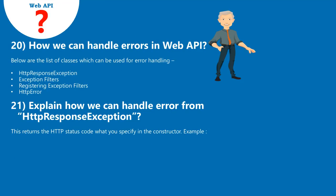Question 20: How can we handle errors in Web API? Below are the list of classes which can be used for error handling: HttpResponseException, Exception Filters, Registering Exception Filters, and HttpError.